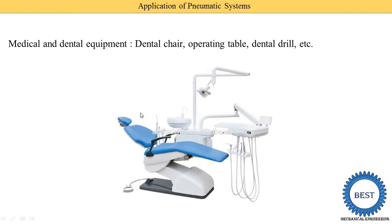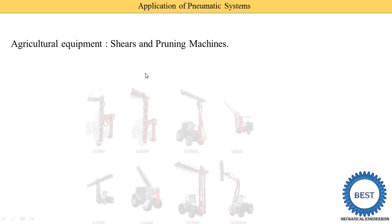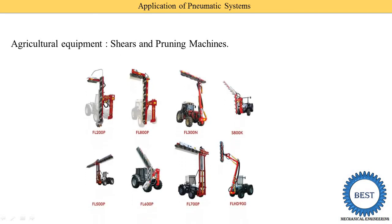Here you see an image of the pneumatic system used for dental purposes. The last application is for agriculture equipment — shears and cleaning machines used for different types of crops. There are various types of pneumatic machines used for agriculture purposes.